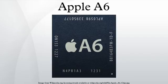The A6 processor package incorporates 1 GB of LPDDR2-1066 RAM compared to 512 MB of LPDDR2-800 RAM in the Apple A5, providing double the memory capacity while increasing the theoretical memory bandwidth from 6.4 GB per second to 8.5 GB per second.